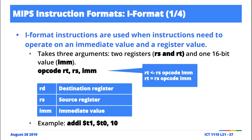The immediate value is there because to perform an operation you need operands. It's like when you're adding two numbers — the numbers are the operands and the plus sign is the opcode. The immediate value acts as one of the operands, but it's a special type of operand because it's an actual value rather than a register holding a value.